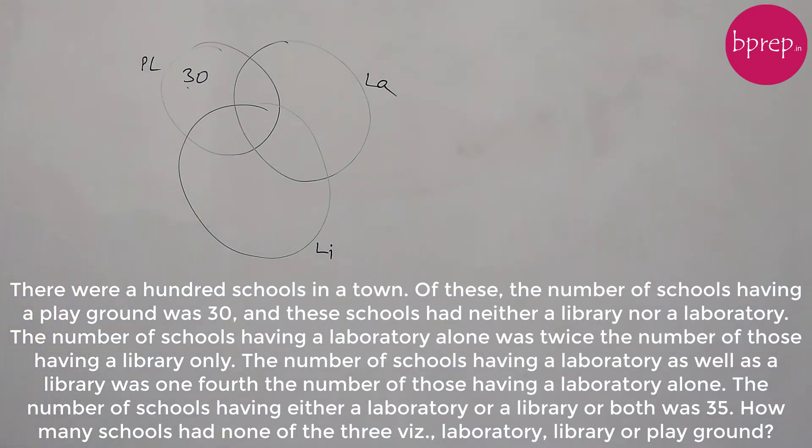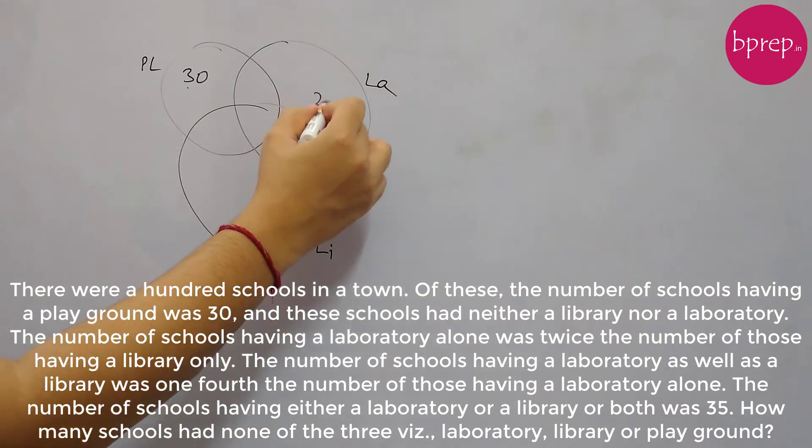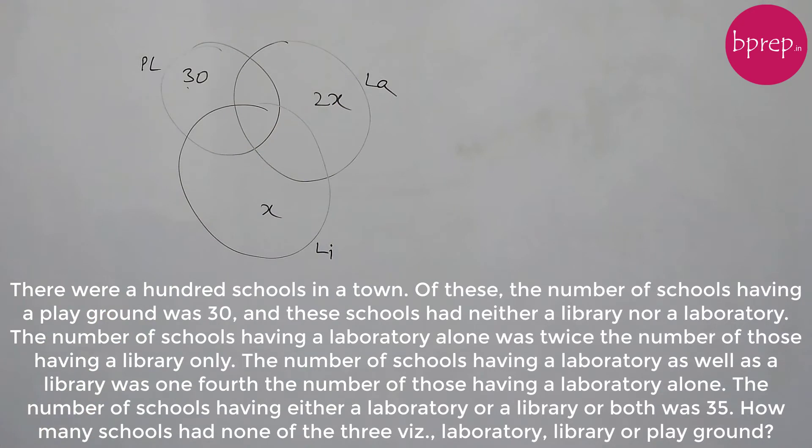The number of schools having a laboratory alone was twice the number of those having a library only. So let's say library only schools are x. So according to this question, number of schools having only laboratory is twice of this, so this is 2x.